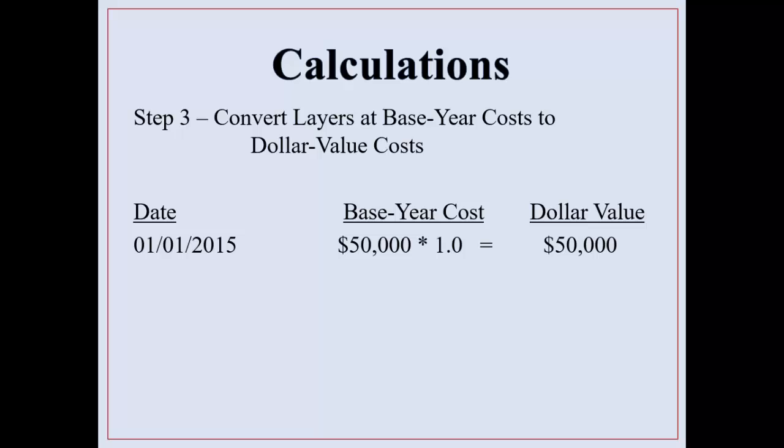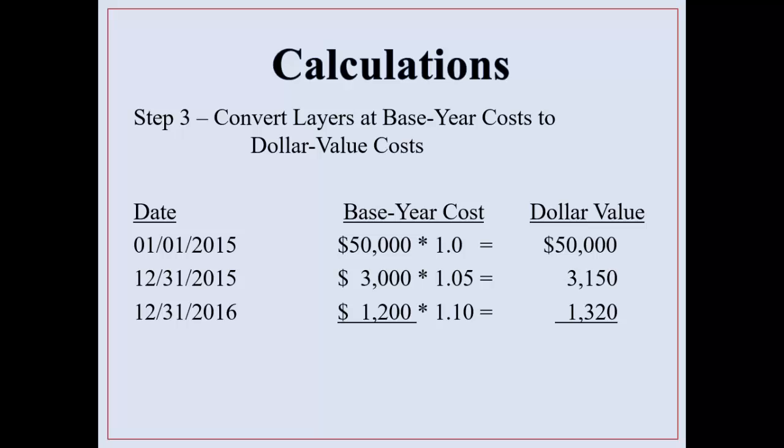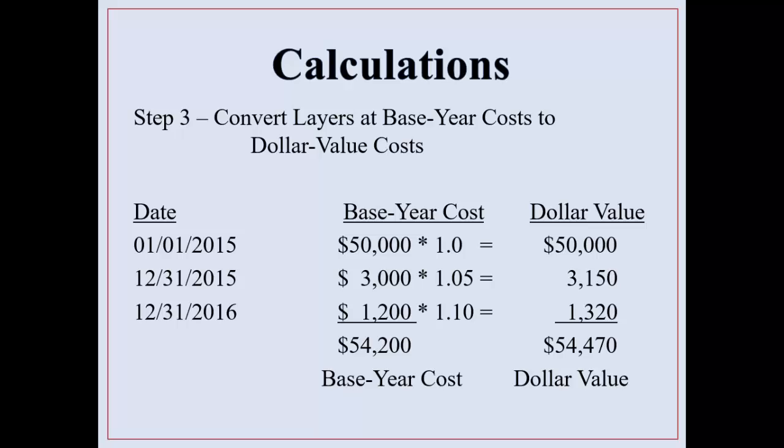Step three: convert the layer at base year cost to its dollar value cost. You have dollar value cost, convert it to base year cost, and then after you determine your layers, convert it back to the dollar value. Take the $3,000 layer and apply the cost index. This is done because you can't distinguish in an entire amount what layers were added and when, given the different inflationary effects of different years. So you're removing the effects of inflation, calculating your layers, then adding back in the effects of inflation to determine your dollar value.